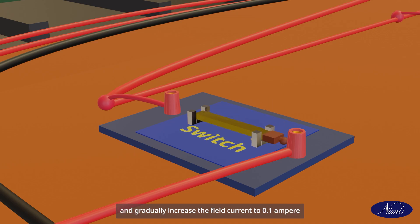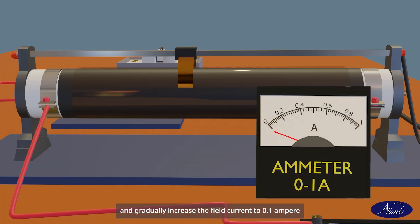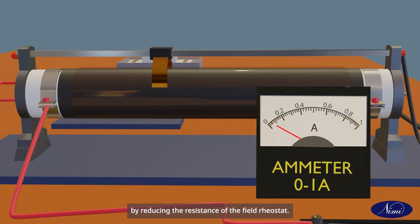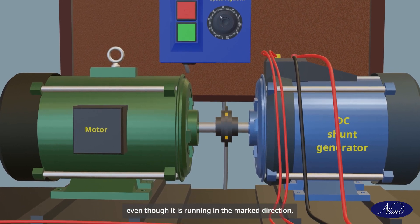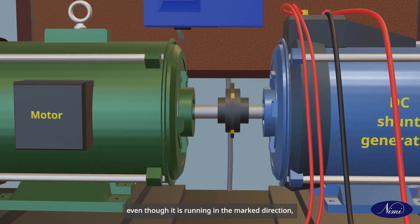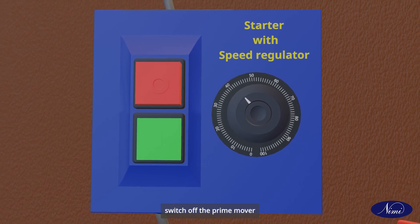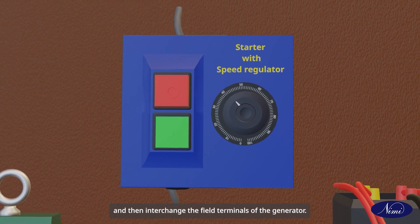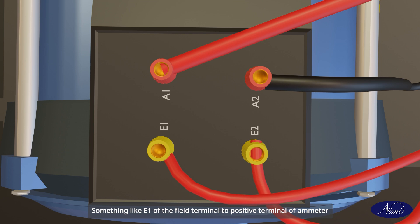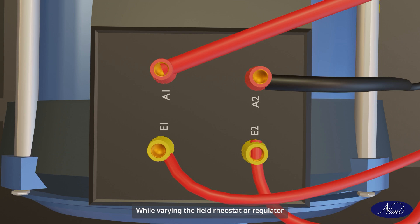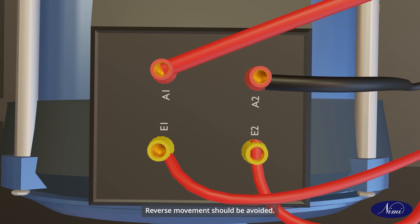Close the field circuit switch and gradually increase the field current to 0.1 ampere by reducing the resistance of the field rheostat. If the generator is not able to build up voltage even though it is running in the marked direction, switch off the prime mover and then interchange the field terminals of the generator — something like E1 of the field terminal to the positive terminal of the ammeter and terminal E2 to the switch. While varying the field rheostat or regulator, it should be done positively and slowly in the forward direction; reverse movement should be avoided.